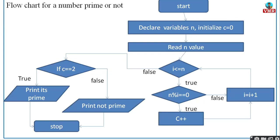For n = 4: i = 1, 1 ≤ 4 is true. 4 modulus 1 = 0, so c increments from 0 to 1, and i increments to 2. Then 2 ≤ 4: true. 4 modulus 2 = 0 — divisible — so again c increments: c becomes 2, and i becomes 3.